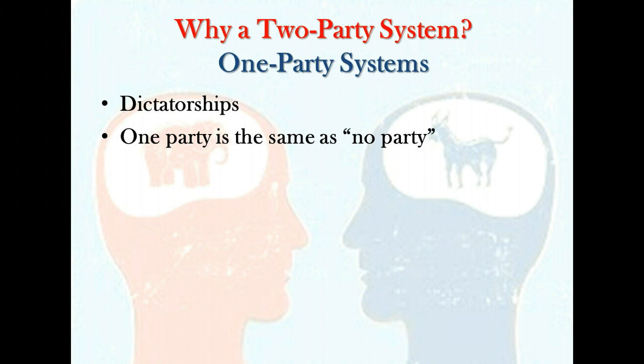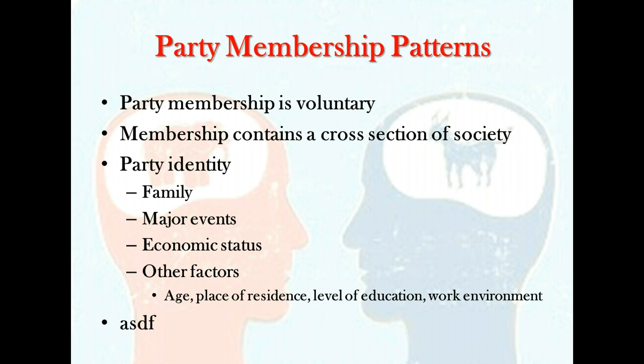Party membership patterns: membership in a party is purely voluntary. A person is a Republican, Democrat, minor party member, or independent because that is what he or she chooses to be. The two major parties are broadly based; to gain more votes than their opponents, they must attract as much support as possible. Each party has always been composed of a cross-section of the nation's population — Protestants, Catholics, Jews, Whites, African Americans, Latinos and other minorities, professionals, farmers, union members, the young, middle-aged, elderly, city-dwellers, suburbanites, and rural residents.